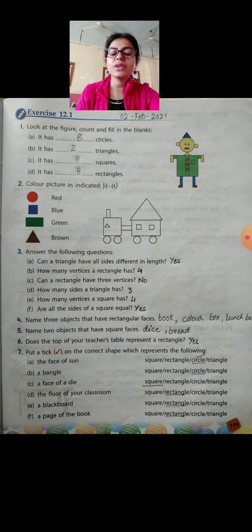That is, wherever you find a circle in the picture, you will use red color to fill it. Similarly, blue will be used for square shapes, green for rectangles and brown for triangles. So, you have to use these colors on these specific shapes.